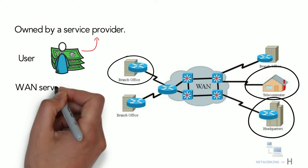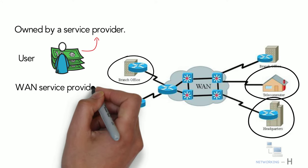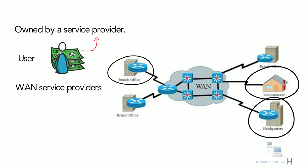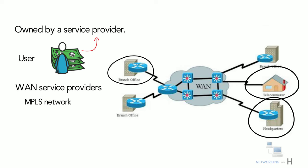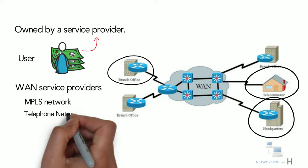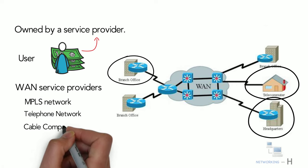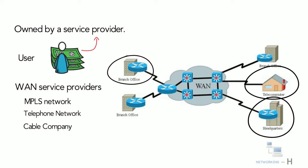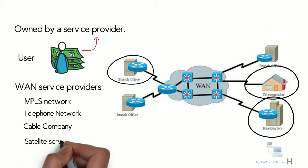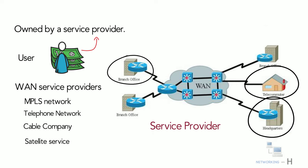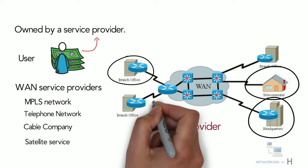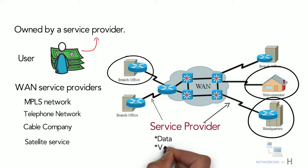WAN service providers include carriers such as MPLS, telephone networks, cable companies, or satellite. Service providers provide links to interconnect remote sites for the purpose of transporting data, voice, and video.